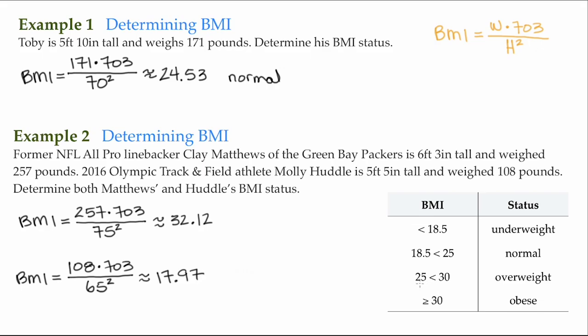Between 25 and less than 30 is considered overweight, and any BMI greater than or equal to 30 is considered obese. Clay Matthews is at 32.12, so according to this chart, he would be considered obese.